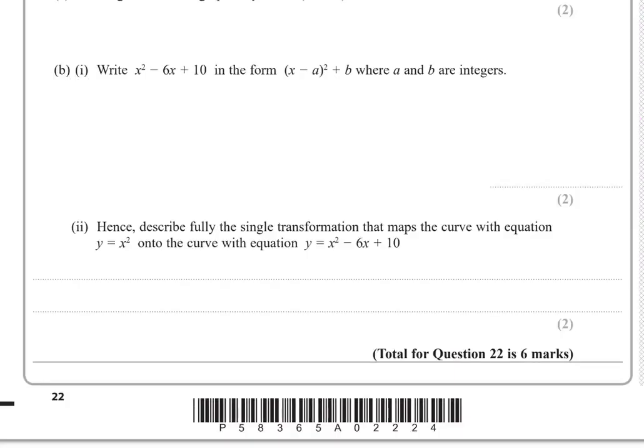Part b i: Write x squared minus 6x plus 10 in the form x minus a squared plus b, where a and b are integers.